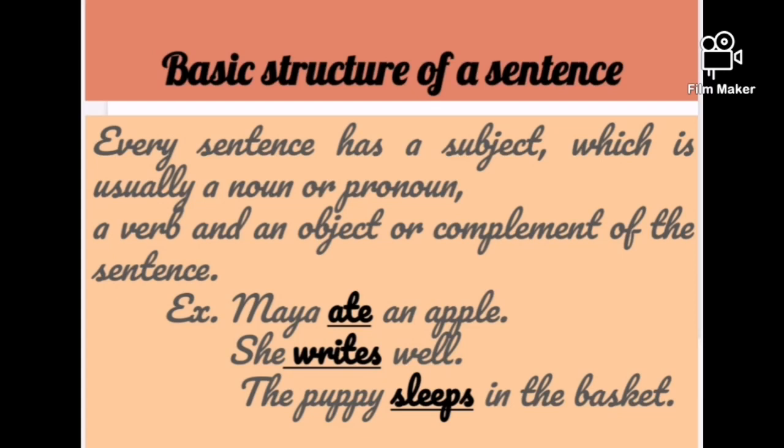Every sentence has a subject, which is usually a noun or a pronoun, a verb, and an object or complement of the sentence. It is not necessary that every sentence will have an object. For example: 'Maya ate an apple' — here 'ate' is the verb; 'She writes well'; 'The puppy sleeps in the basket.'